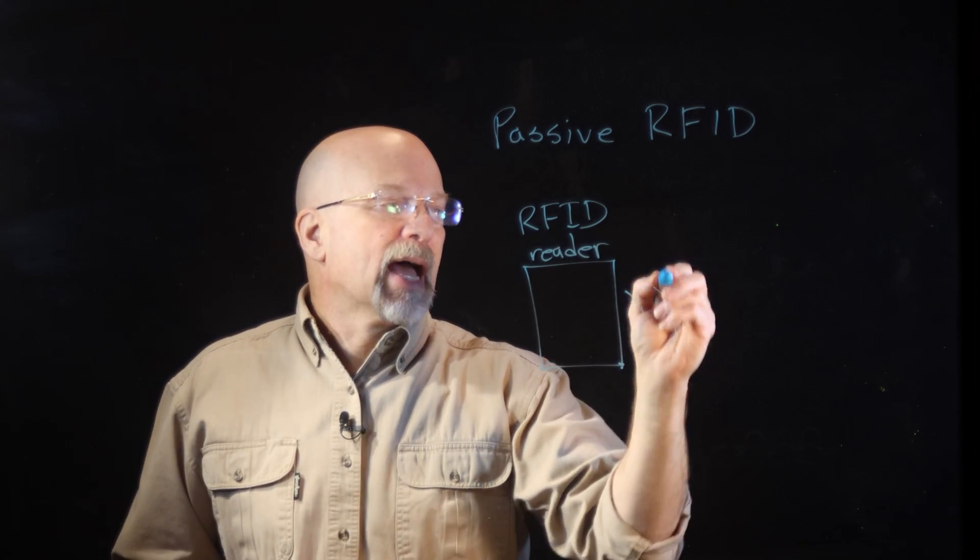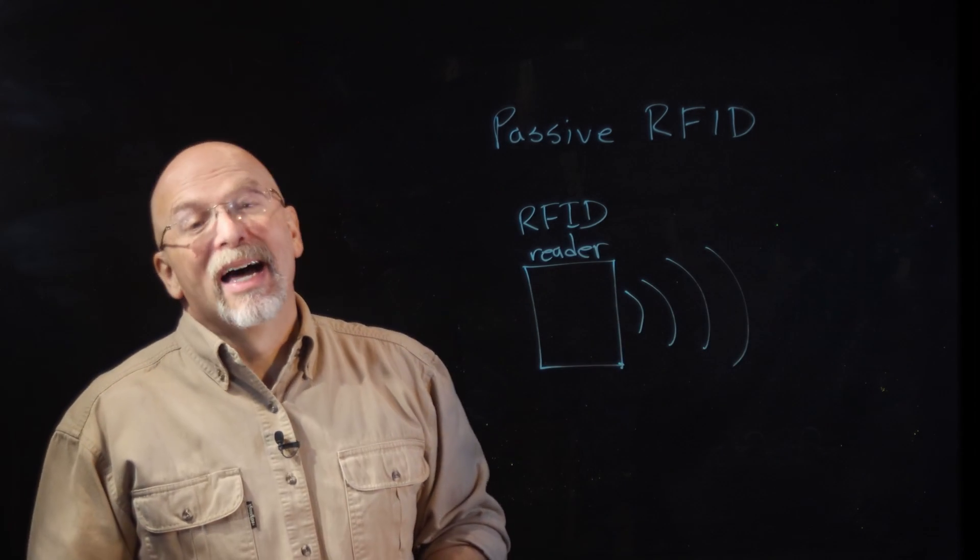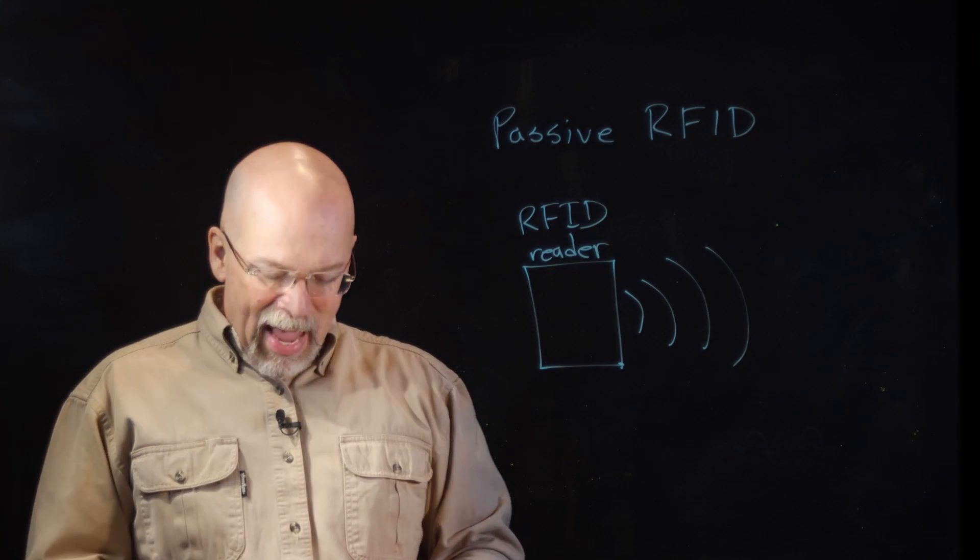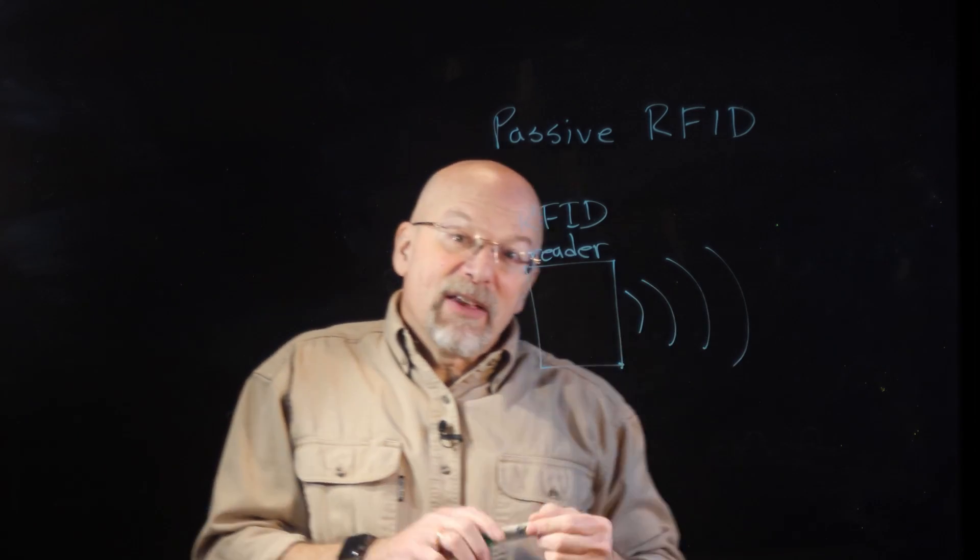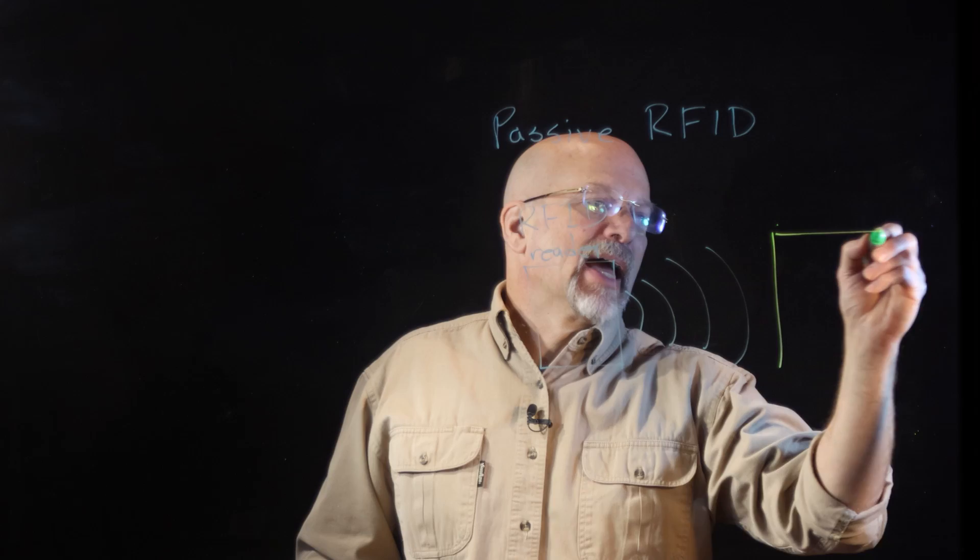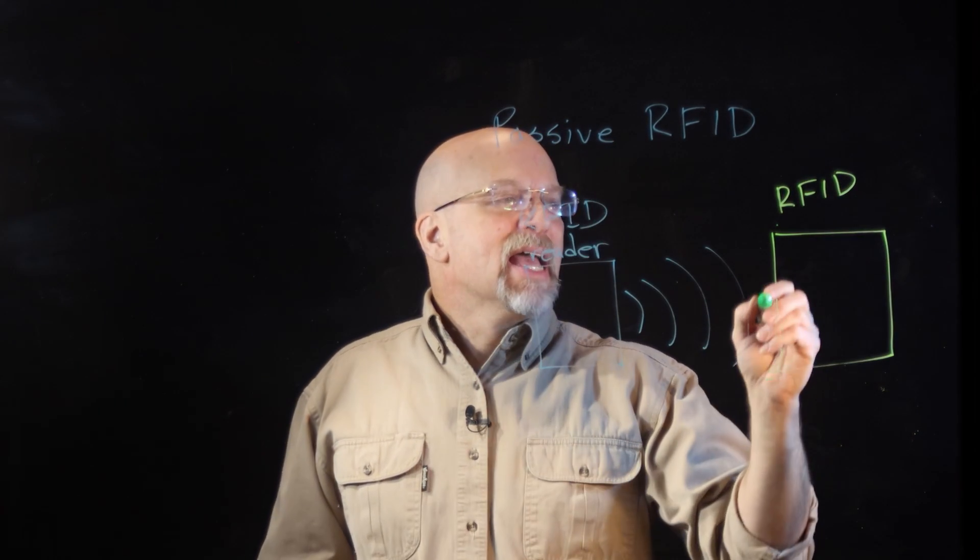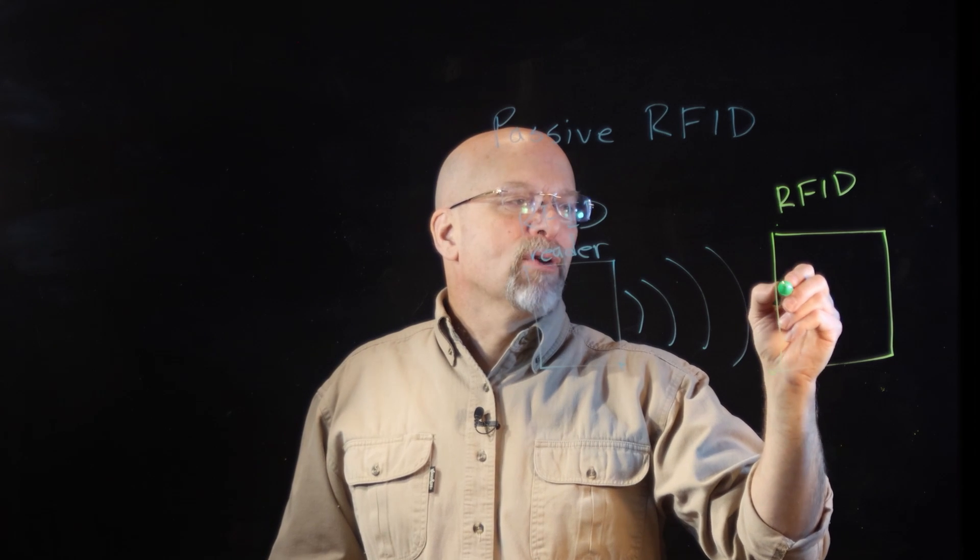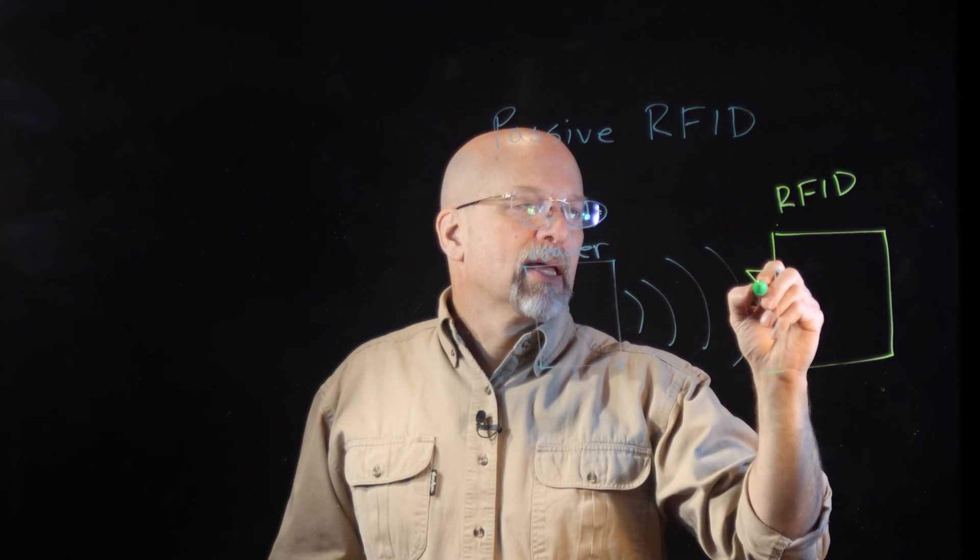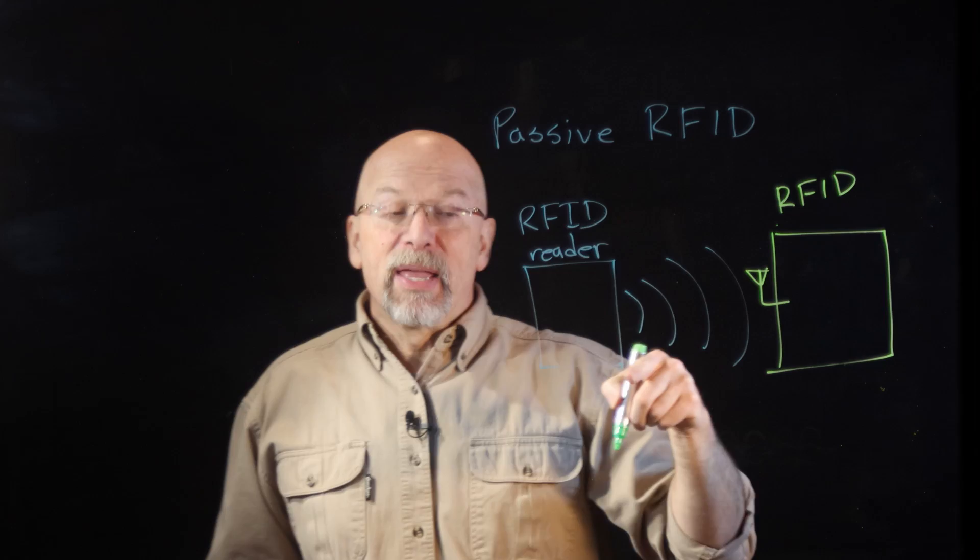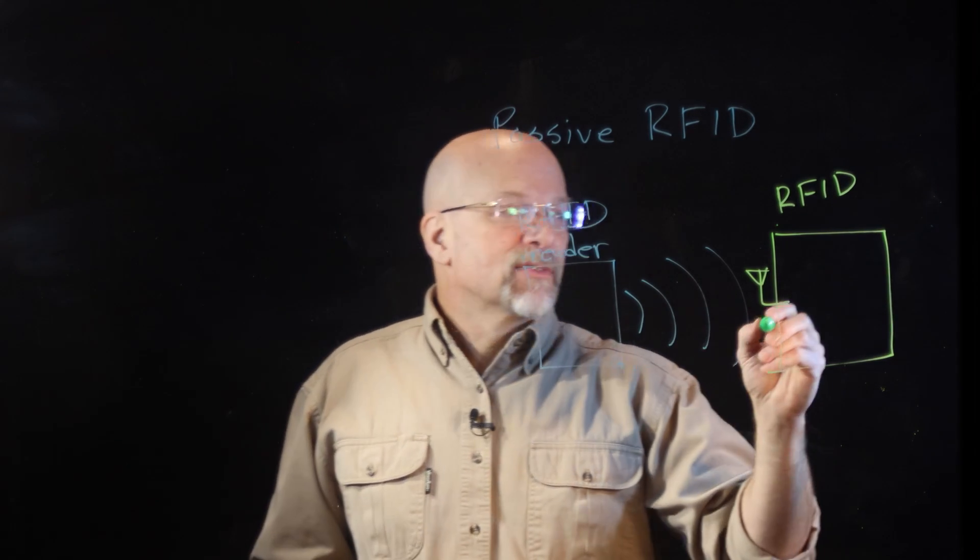And it is broadcasting out electromagnetic waves. And whenever you're looking at the receiver side, the tag, so we've got on this side the RFID tag, its antenna, whenever it picks up on its antenna, when it picks up these electromagnetic waves, it goes into something referred to as a rectifier.